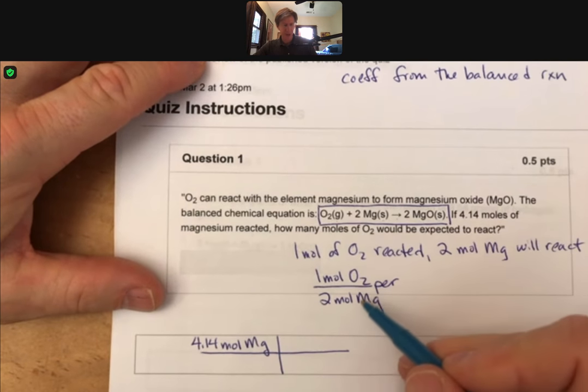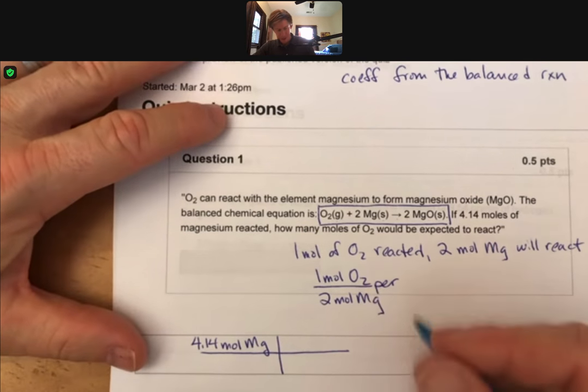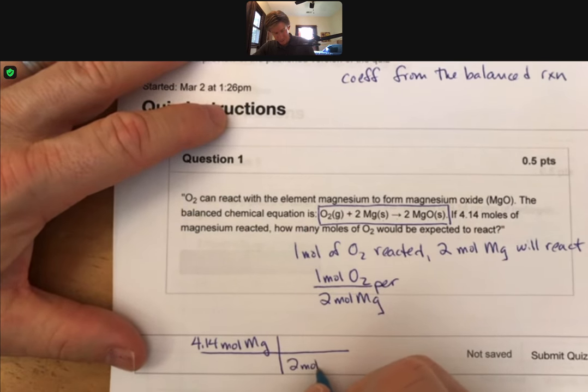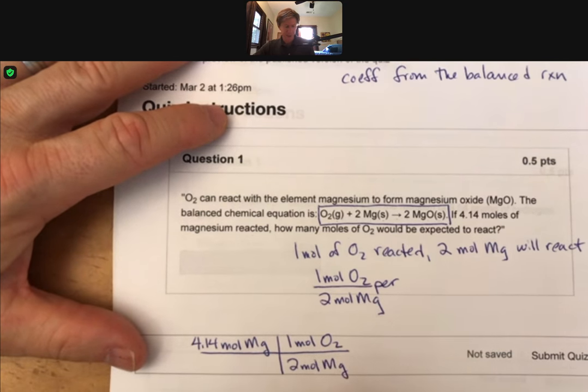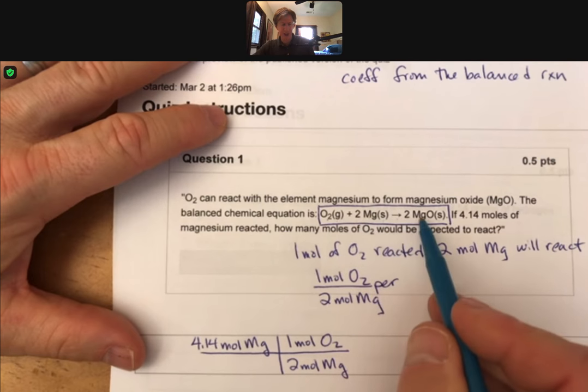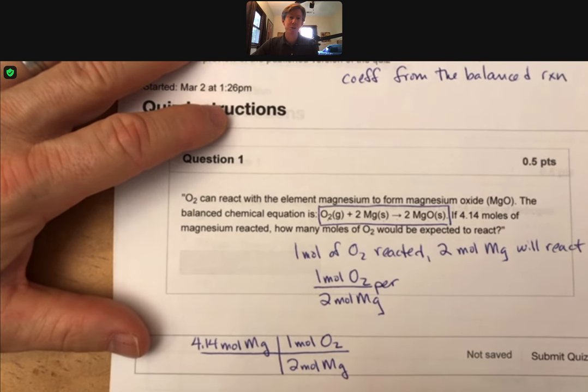We can use our unit conversion factor, 2 moles magnesium for every one mole of O2. Just to be clear, we're only using formulas that are in the actual reaction. That's how we know it's O2 and not O.